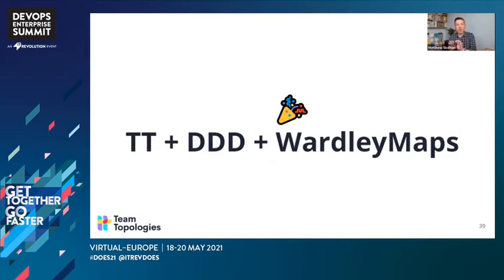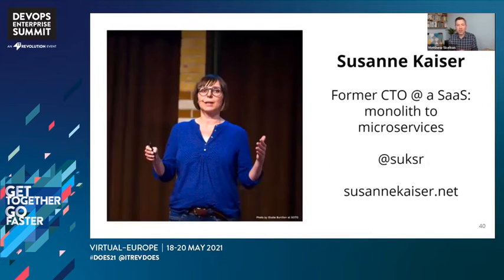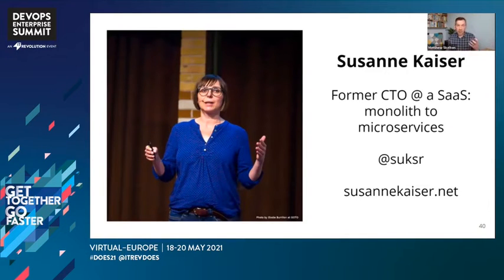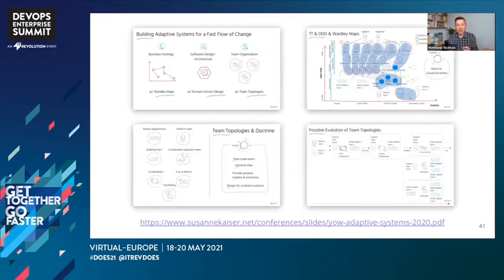The combination of Team Topologies, Domain Driven Design (DDD), and Wardley Maps seems to be really gaining traction, because these three techniques are complementary. In particular, Suzanne Kaiser — former CTO at a cloud company with a focus on monolith-to-microservices transition — has talked about the combination of DDD and Wardley mapping, and now also the addition of Team Topologies principles, to help organizations think about their technology choices, strategic direction, which teams should focus on which things and for how long. There's a great talk from Suzanne linked on the slide.